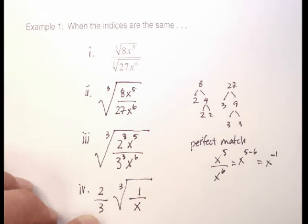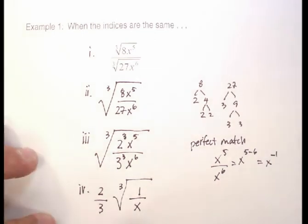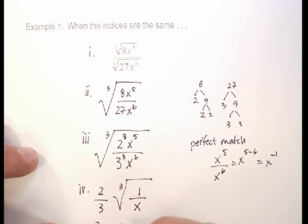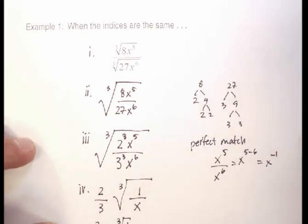And x to the negative 1 means it goes in the denominator. So now I've got 2 thirds times the cube root of 1 over x. To handle that, I'm going to split it up: 2 thirds times the cube root of 1 over the cube root of x.